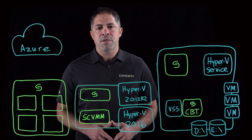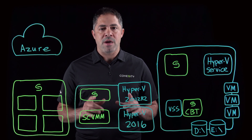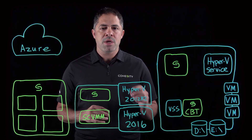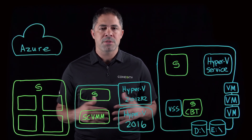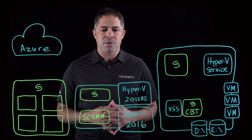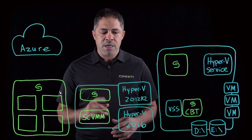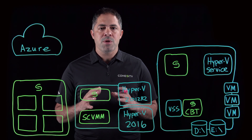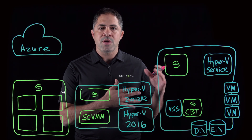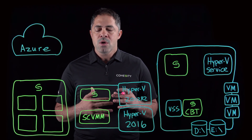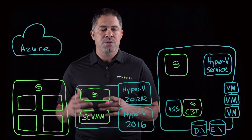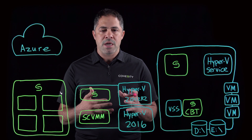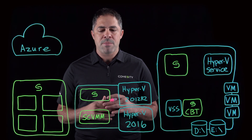Let me highlight some of the points of integration with both supported versions of Hyper-V. We utilize Microsoft's native APIs for communication and interaction with any of the subsystems that are part of the Hyper-V architecture. In particular, we utilize WMI to conduct any communication between the actual Hyper-V host and anything going on there, while we utilize PowerShell APIs to communicate with anything related to the centralized management portal — in this case, System Center Virtual Machine Manager.